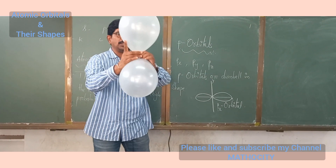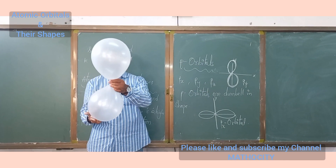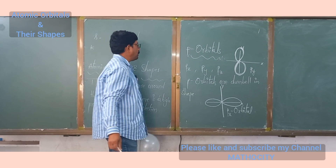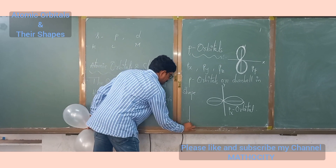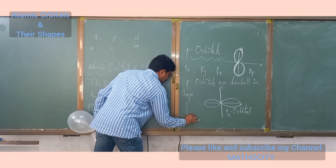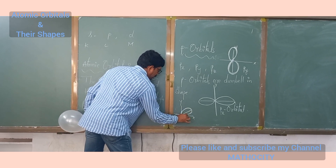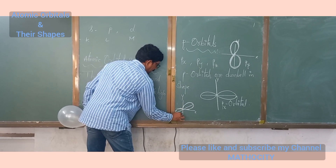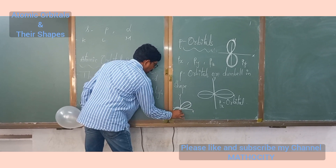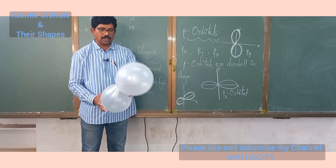Next is the Py orbital — the electron cloud is oriented along the y-axis. Then the Pz orbital: in the name itself, x, y, and z are indicated. The electron cloud within this region moves round the nucleus along the z-axis. This is the Pz orbital.